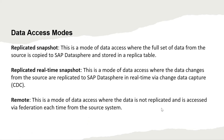There are three data access modes available in SAP Data Sphere for remote tables. First is replicated snapshot, where the full set of data from the source is copied to SAP Data Sphere and stored in a replica table — essentially importing the data. Second is replicated real-time snapshot, where data changes from the source are replicated to Data Sphere in real time via Change Data Capture (CDC).